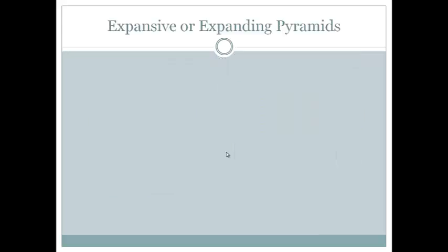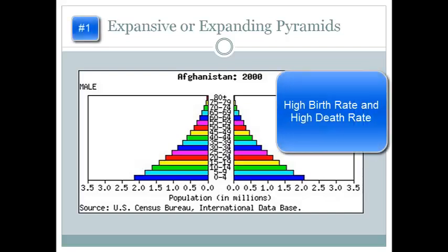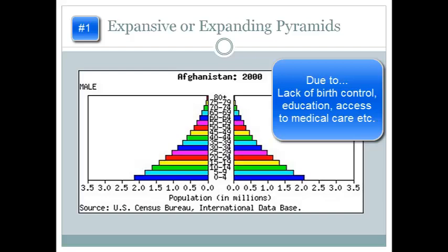There are three main types of population pyramids. The first is expansive or expanding. In this type, you're going to have a wide base indicating a high birth rate and a narrow top indicating a high death rate. Generally, these populations are characteristic of lower standard or developing countries, often due to lack of birth control, lack of education, and medical care.